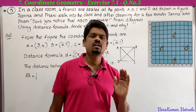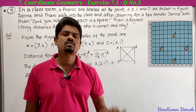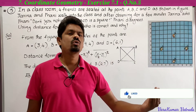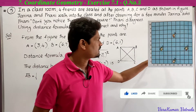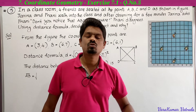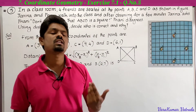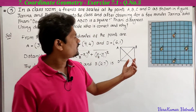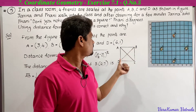So there are four students seated in the classroom. While entering, Jarina observes the four students and asks Funny: don't you notice that ABCD is a square? She is saying the students are seated in a square, but Funny disagrees. So using the distance formula, we have to find who is correct. Let the positions of A, B, C, D form a square.